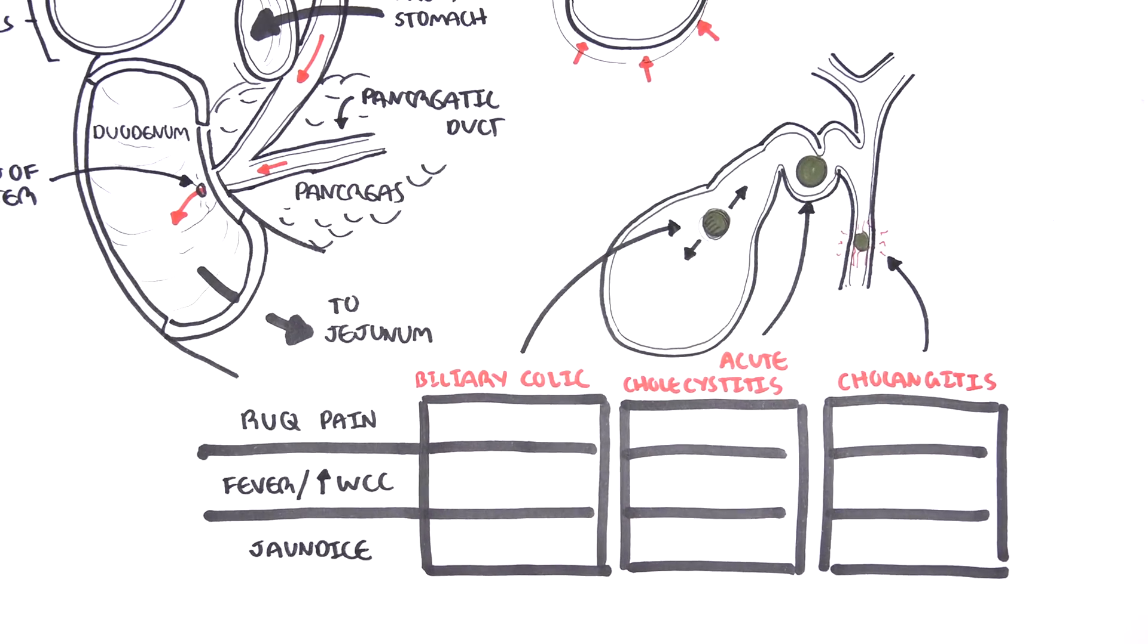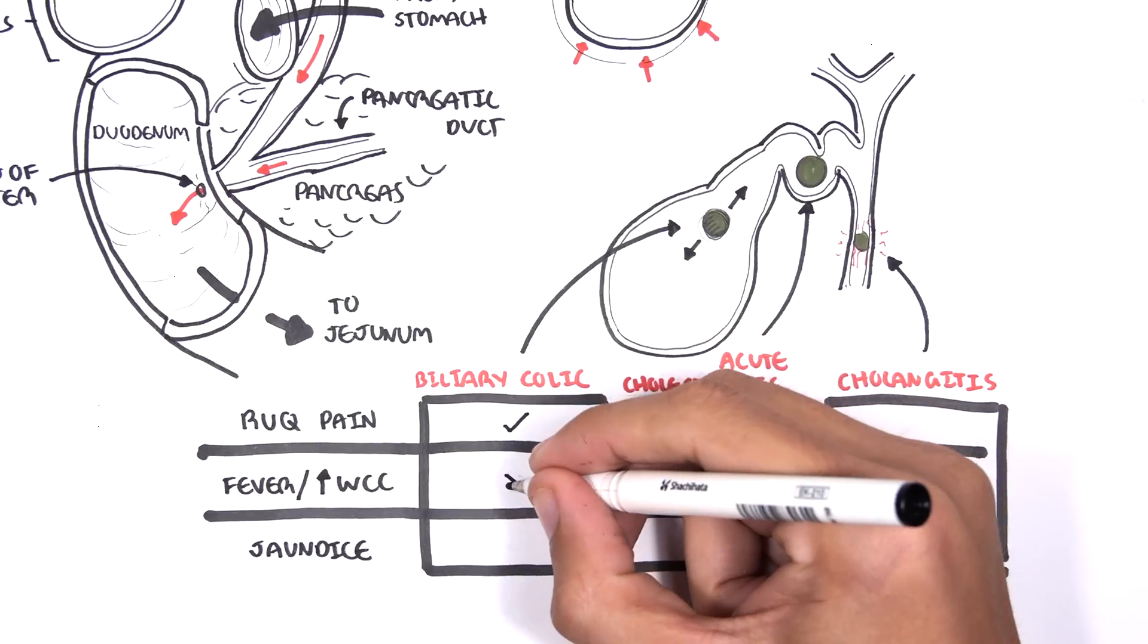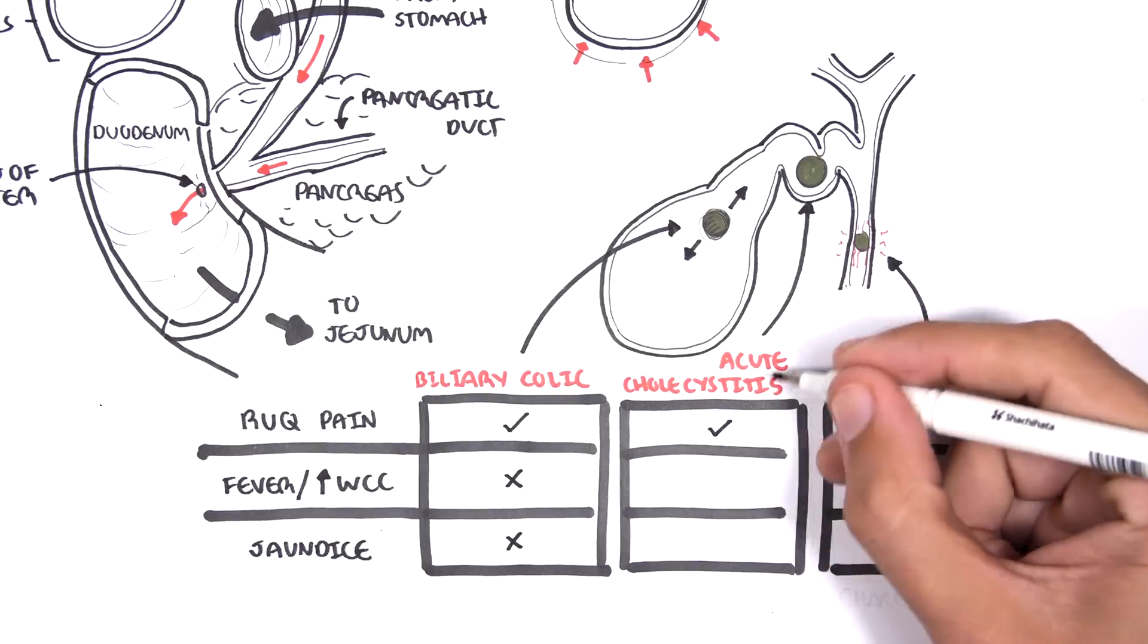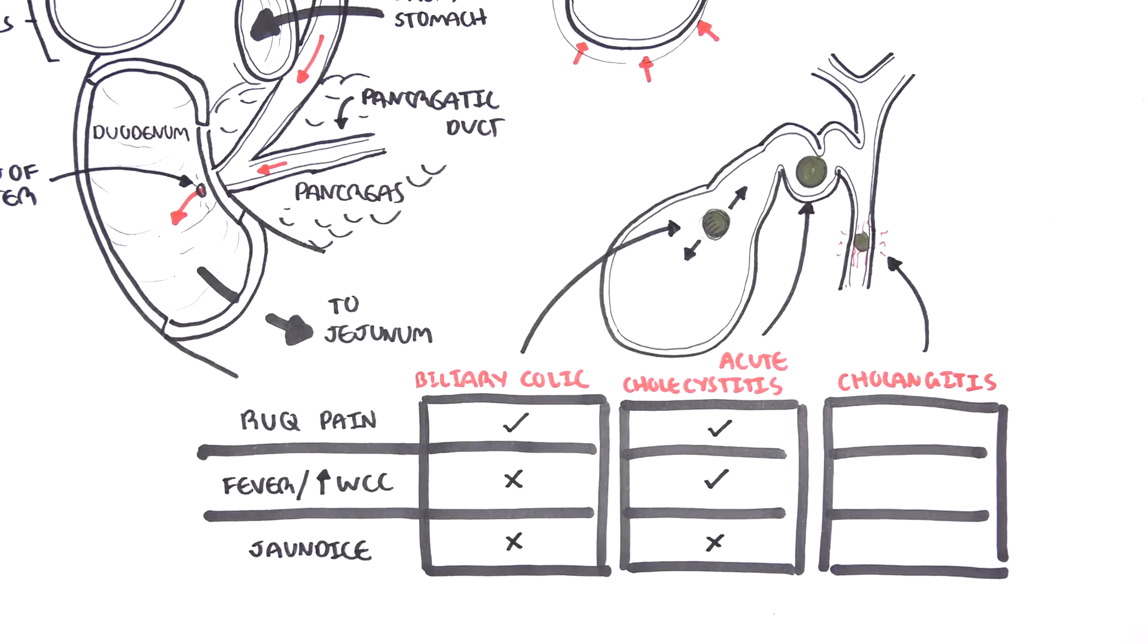Going back to the small table we made, the differences in the three conditions, biliary colic, acute cholecystitis, and cholangitis, is that biliary colic only presents with right upper quadrant pain typically. Acute cholecystitis, right upper quadrant pain, with fever and raised white cell count.